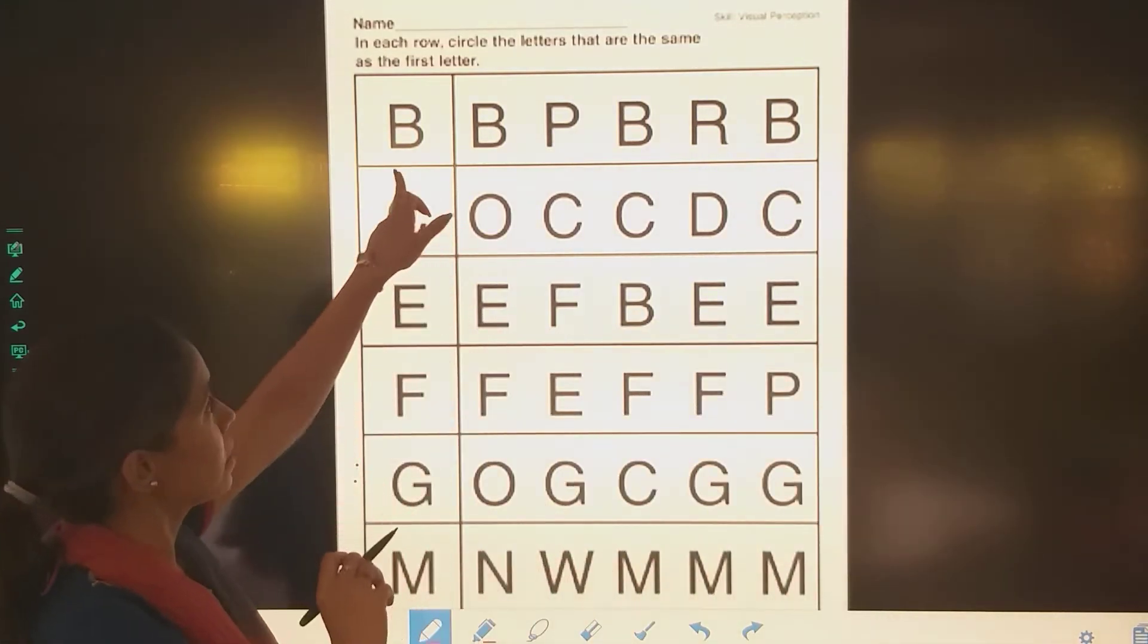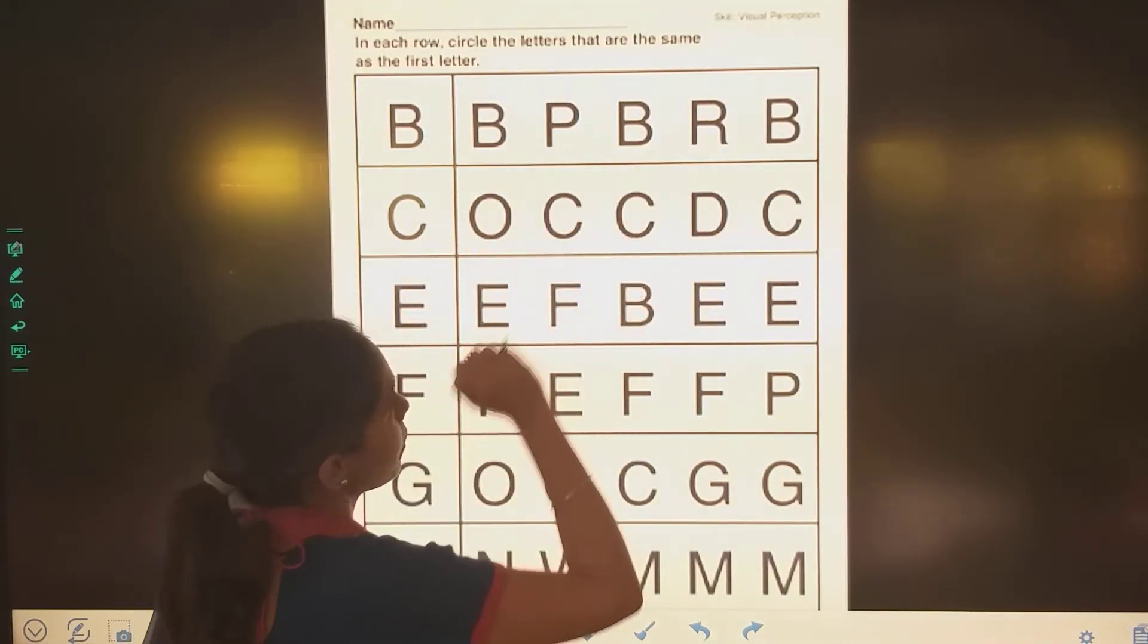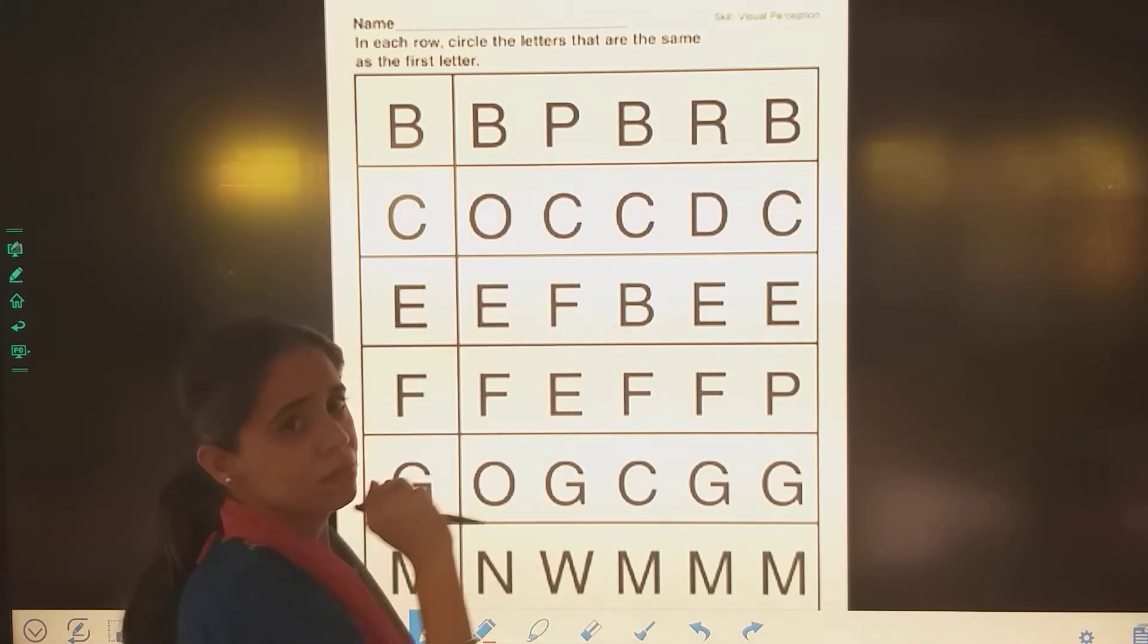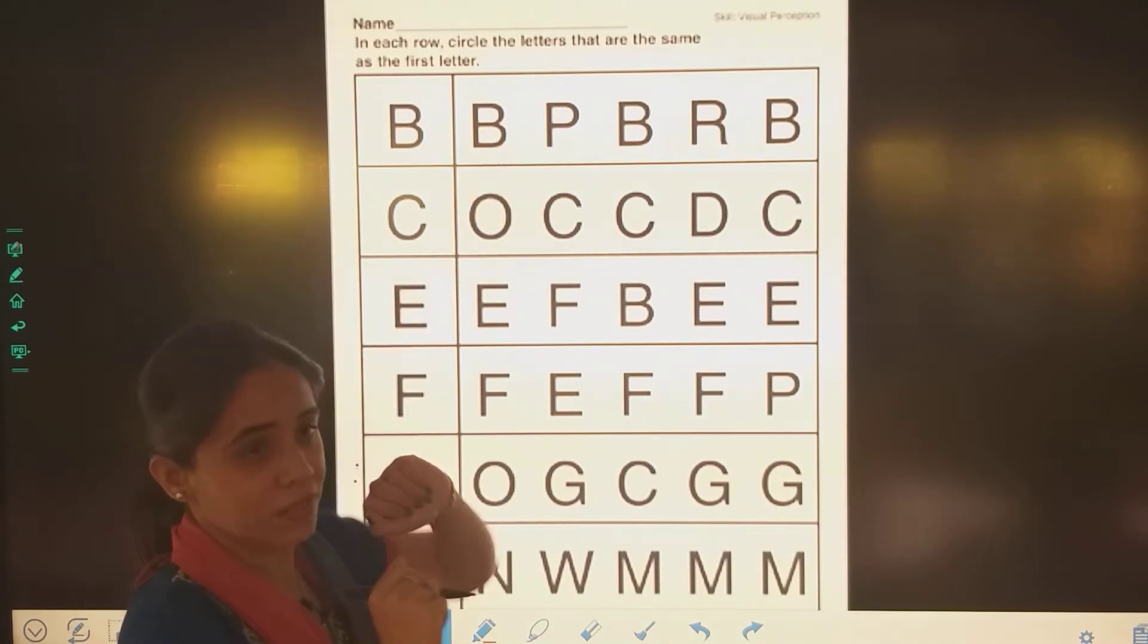So the first letter is, kaunsa hai first letter, batao? B. Toh B kaha hai yaha pere? Yeh B hai? No. Yeh B hai? No. This is B, right?